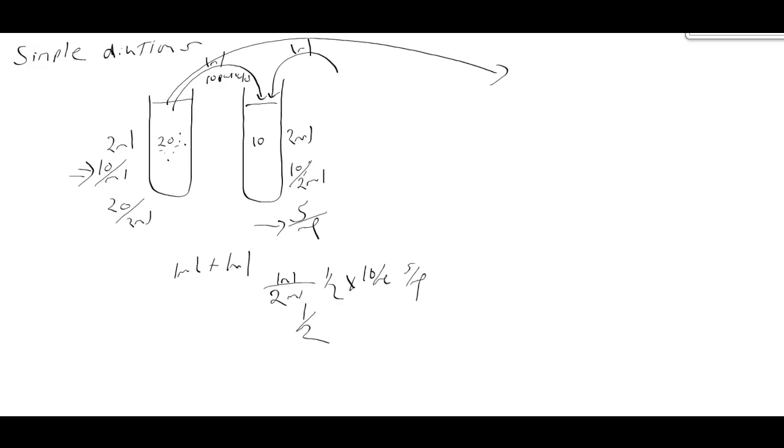And if we did the same thing, we took a mil. Let me come over here. There's our 1 mil in there. And we put it in kind of a shaky looking tube. But we're going to add 9 mils of buffer. So this 1 mil still came from there. So it has 10 particles in that 1 mil.